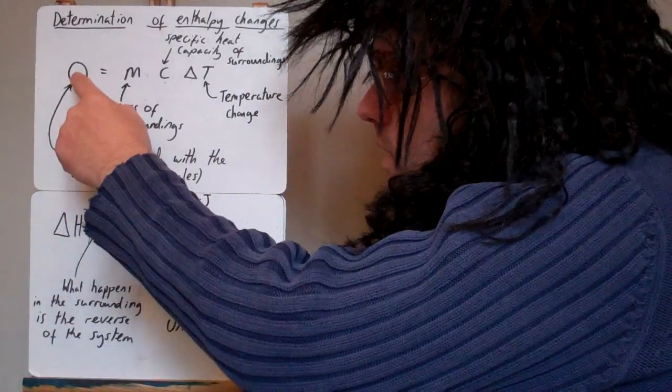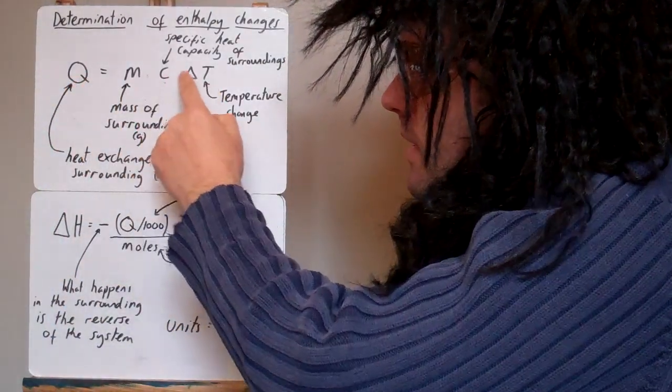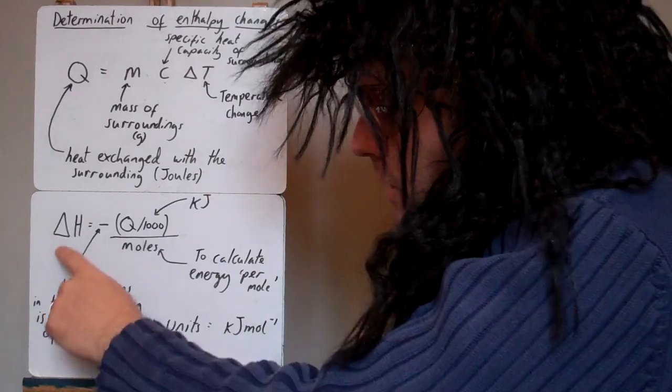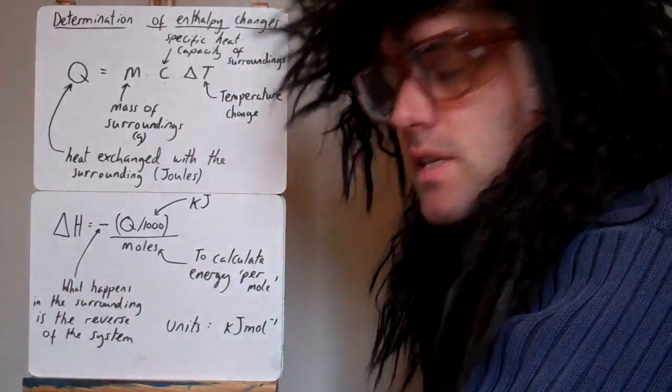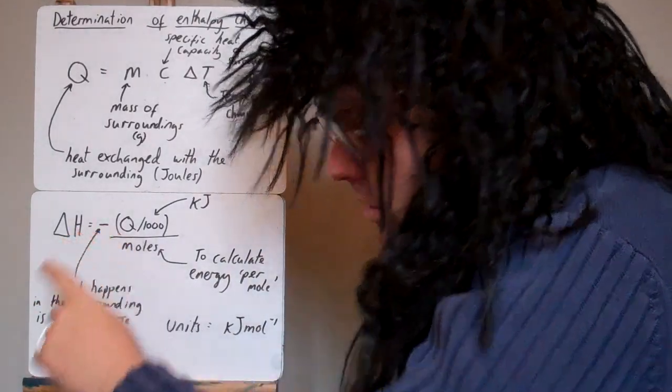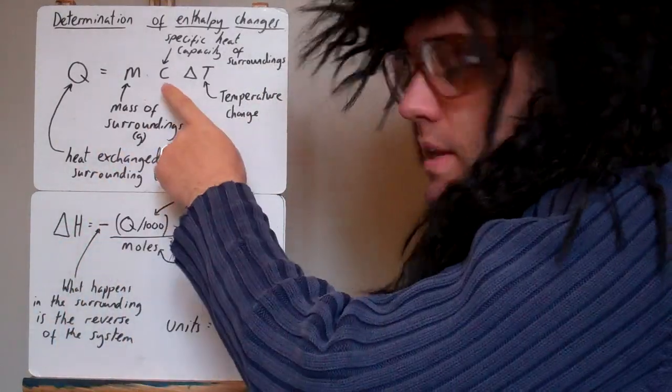So we take this equation Q, MC delta T, and we want to turn it into enthalpy change. Enthalpy change is looking at the system. So that's why we put a minus in front of it, because it would be the opposite of what happened in the surroundings.